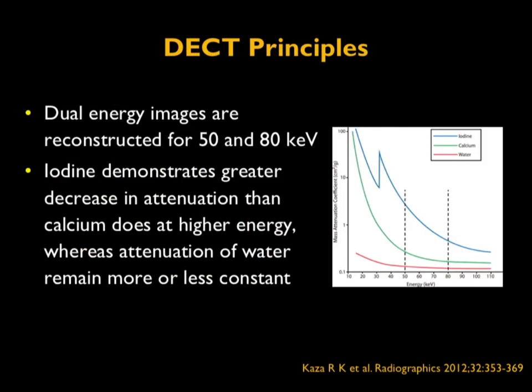In principle, the dual-energy images are reconstructed at 50 and 80 kV. As shown on the spectrum graph, the difference in attenuation between iodine, calcium, and water is very high at low energy and slightly less at high energy. Iodine demonstrates a greater decrease in attenuation than calcium at higher energy, whereas the attenuation of water remains more or less constant — and these differences are exploited in dual-energy CT.